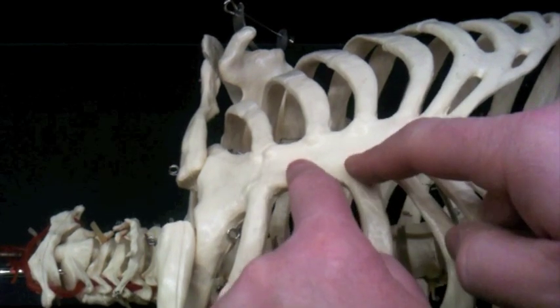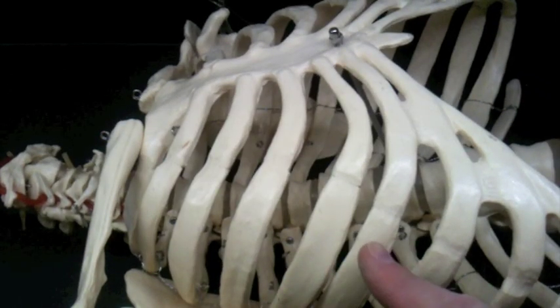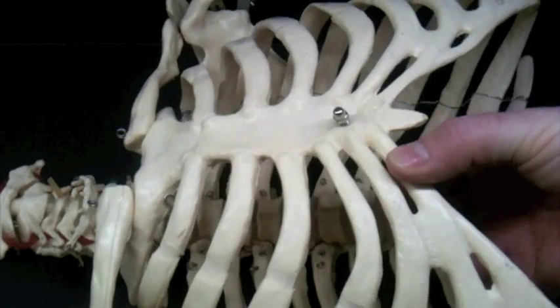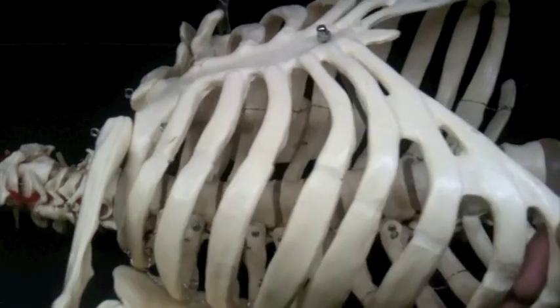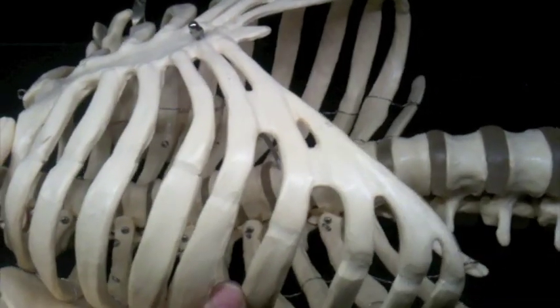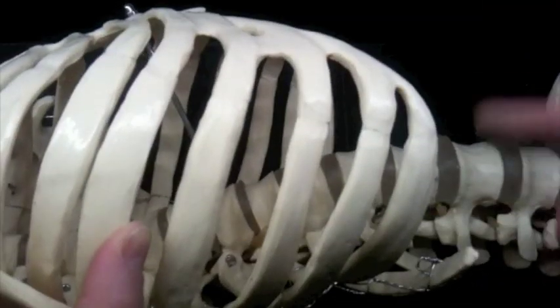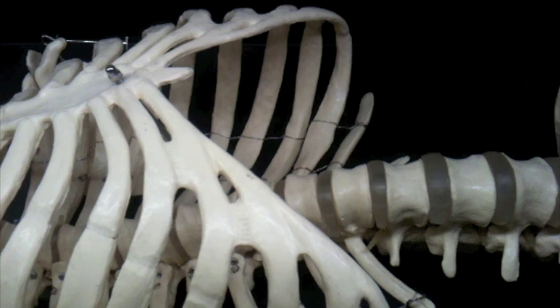These first ribs are true ribs. They go bone to cartilage to bone. But when we get down here, we call these ribs false ribs because it goes bone, cartilage, cartilage connects to more cartilage, see how this connection occurs here, and then to bone. If you go down far enough, you actually see a kind of rib at the bottom here that don't connect to any costal cartilage at all. Those are floating ribs. So we have true ribs, false ribs, and then floating ribs.